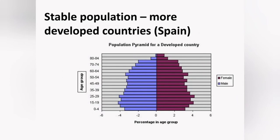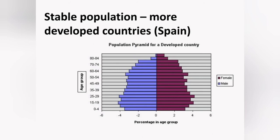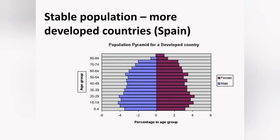In more developed countries, we see a stable population. This graph shows Spain, with males and females on left and right, age groups on the Y-axis, and percentages on the X-axis. The shape is more rectangular, tapering off at the top as the population ages. The population is stable because the number of people aged 0–4 is almost the same as those aged 25–35 and 55, meaning there won't be significantly more babies born in the next generation.